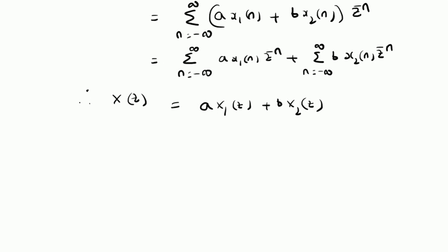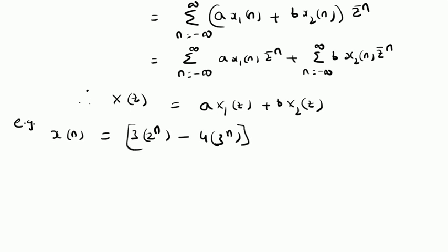Now let us look at an example illustrating this linearity property. We will exploit the linearity property in computing the Z-transform of a complicated signal. Define a signal x of n, which is basically a combination of two signals. For example, we have three times two power n minus four times three power n, and this whole difference is multiplied by u of n. Given this composite signal, we want to find the Z-transform of x of n by using the linearity property.